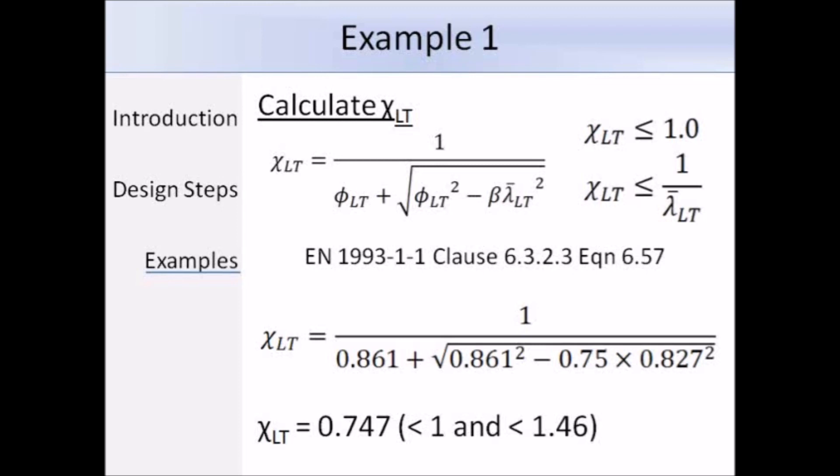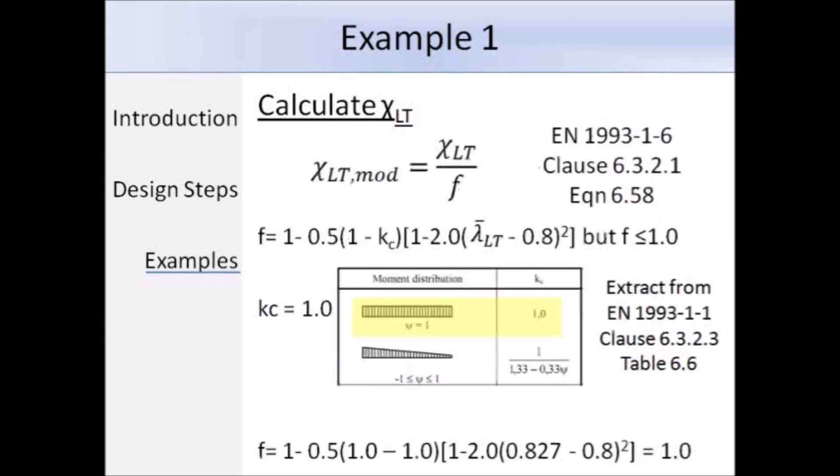Since we're dealing with the special case, we can gain a bit of extra resistance by using chi LT mod. We get that by dividing chi LT by f, and here's the equation to work out f, so we know that lambda bar LT is equal to 0.827. We need to work out kc, so we need to look at table 6.6. And for a constant moment distribution, kc is equal to 1. So substituting in those values, f is equal to 1. So in the cases where the moment is constant, you will not gain any extra resistance, since f will always be equal to 1.